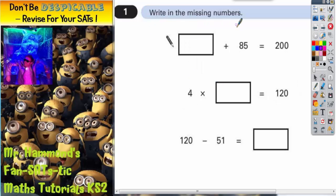Question 1, write in the missing numbers. So we've got mystery number add 85 equals 200, 4 times by a mystery number equals 120, 120 minus 51 equals a mystery number.